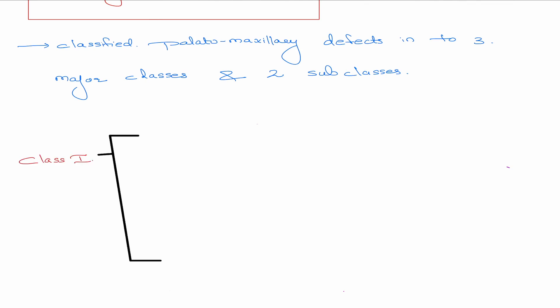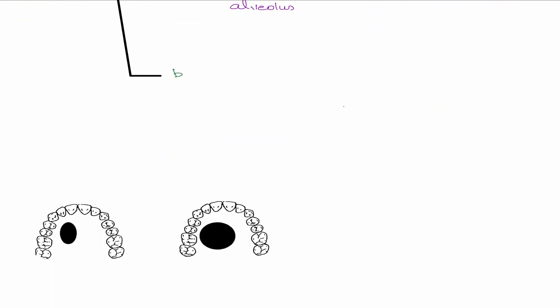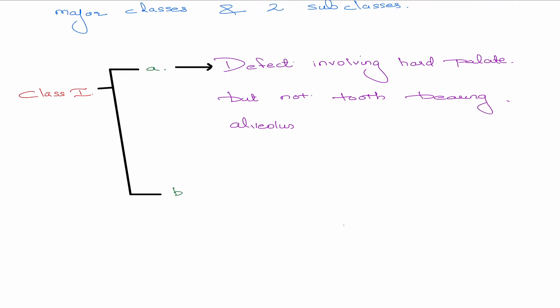Class 1 was further subdivided into class 1A and 1B. Class 1A is the defect involving the hard palate but it does not touch the tooth-bearing alveolus. Looking at the picture, the resection involves the palate but not the tooth-bearing area. The rehabilitation for this is a pure obturator. It's a very useful classification.